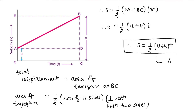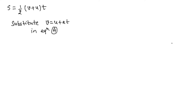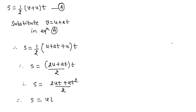Let us label this as equation number A. Using equation A, we will derive the second as well as the third equation. So S = ½(v + u)t. Now let us substitute v = u + at into equation A. S equals half into, in place of v we write u + at, and u is already inside the bracket, with t outside. So S = (2u + at)/2 × t, giving S = 2ut + at²/2, and hence S = ut + ½at². This is equation number 2.